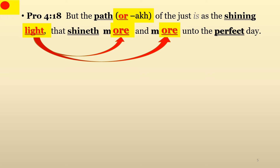The Hebrew word for path used here is pronounced orach, and it's Strong's number 734. As you can see, it begins with OR, which is light in Hebrew. And for the just, indeed, it is a path that shines more and more light until the perfect day.